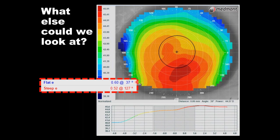In a study of about 500 normal eyes, the average eccentricity for a Medmont was 0.65 to 0.67 — that range was the middle of the bell curve. Most textbooks suggest normal e-value is 0.55 because early topographers sampled a relatively small area, maybe four millimeters from center, whereas a Medmont measures around 10 millimeters. So normal eccentricity for a Medmont is about 0.65–0.67, and for a large cone topographer measuring a small area, about 0.55.